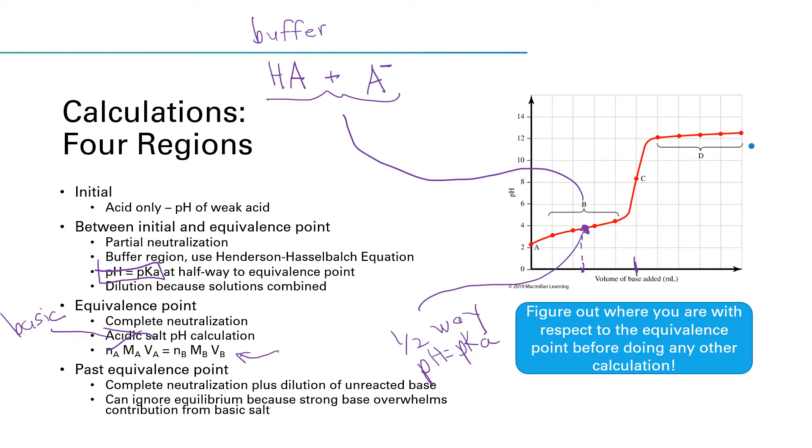What we need to consider is that all of the acid has been neutralized and now we've added excess base. So we just need to figure out how much base is in excess and how much that has been diluted by combining the two solutions. And that will tell us how to calculate the pH. But just like with the strong acid, strong base, it's really important before you jump into doing any of these calculations that you figure out where you are. Are you before the equivalence point? Are you at the equivalence point? Or are you past the equivalence point?